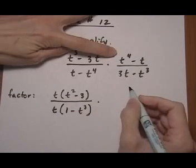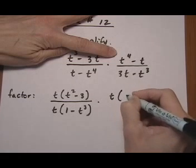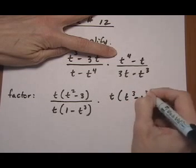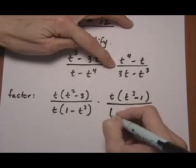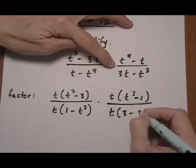Top right, we can take out 1t. And we're left with t cubed minus 1. Bottom right, we can take out 1t again. And we're left with 3, take away t squared.